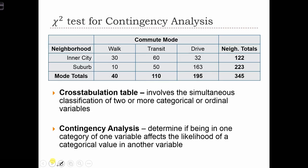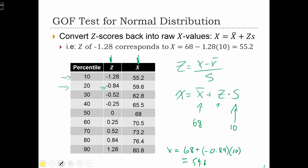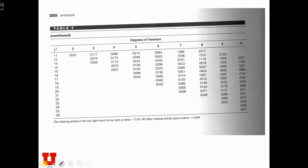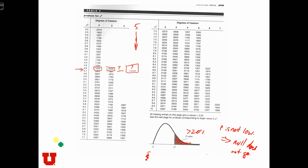So in order to find the critical value in this case, we've got 10 minus 3, so we've got 7 degrees of freedom.